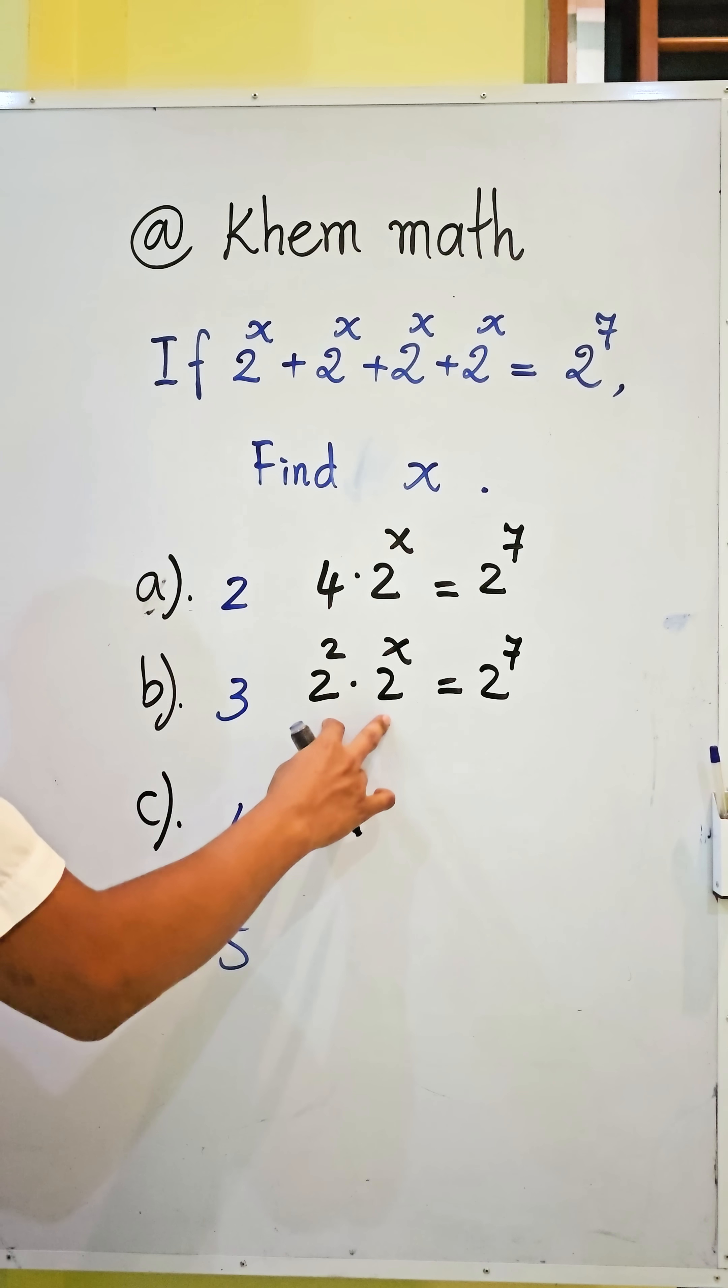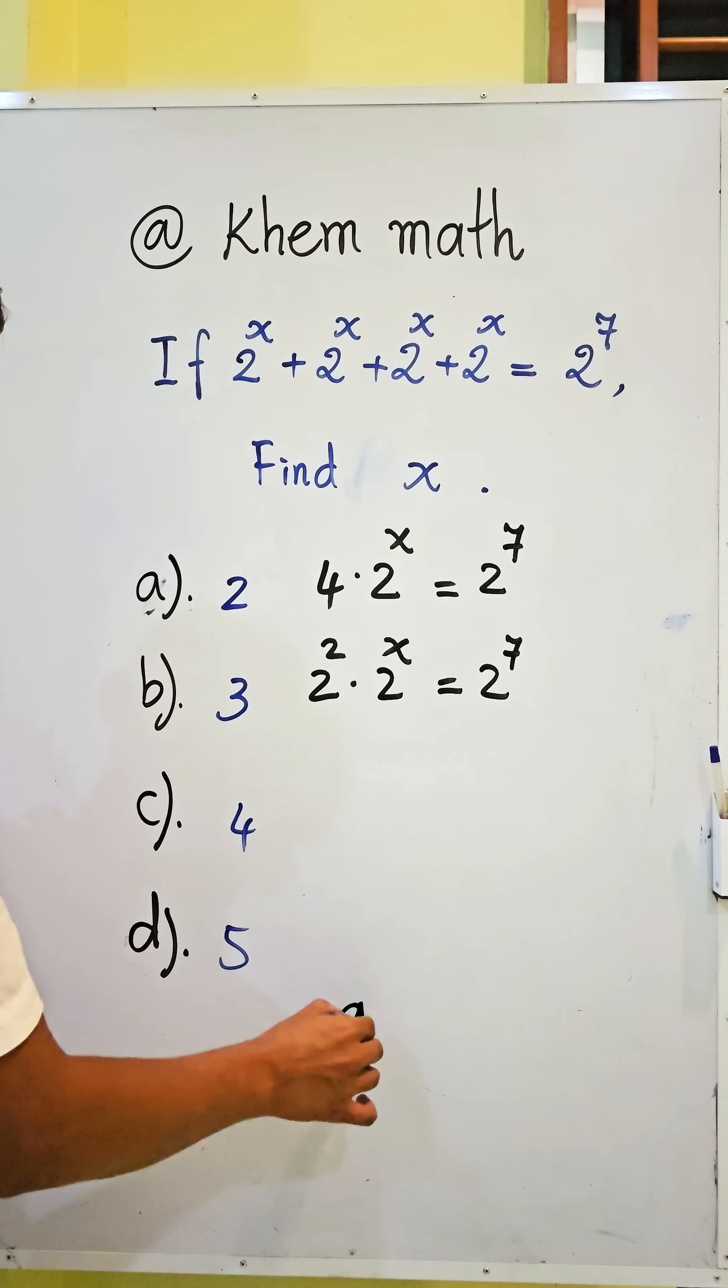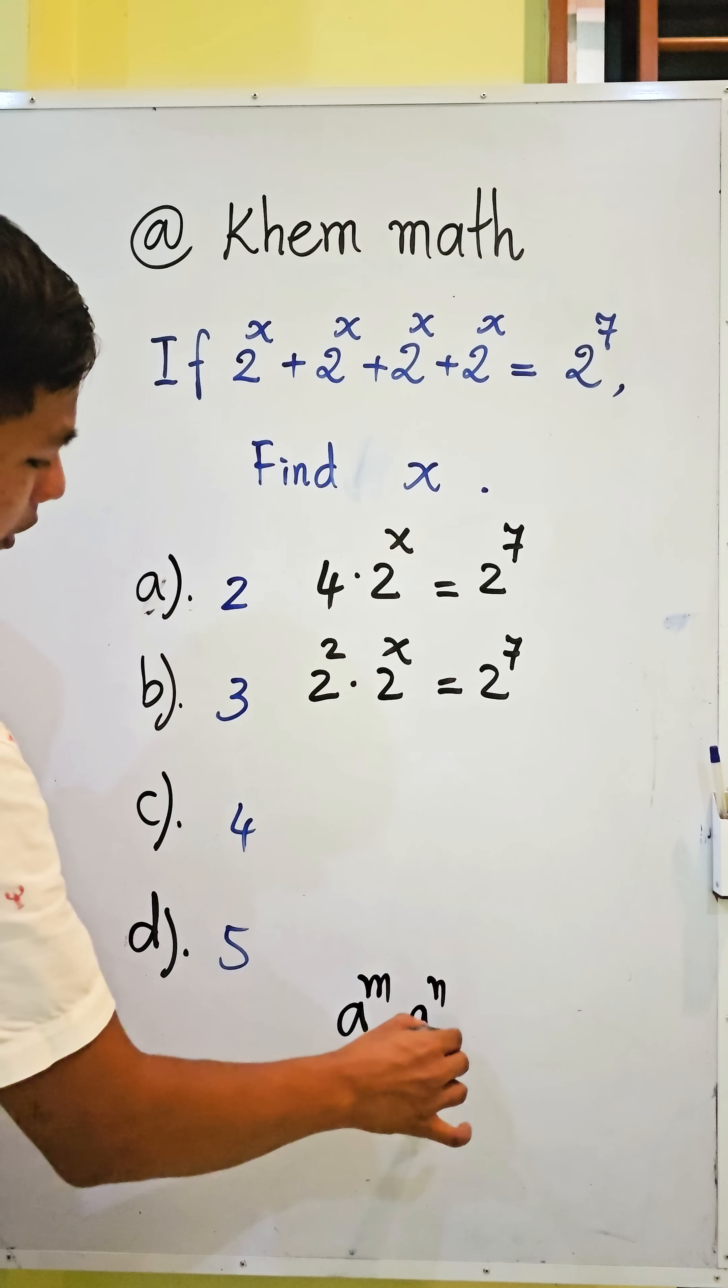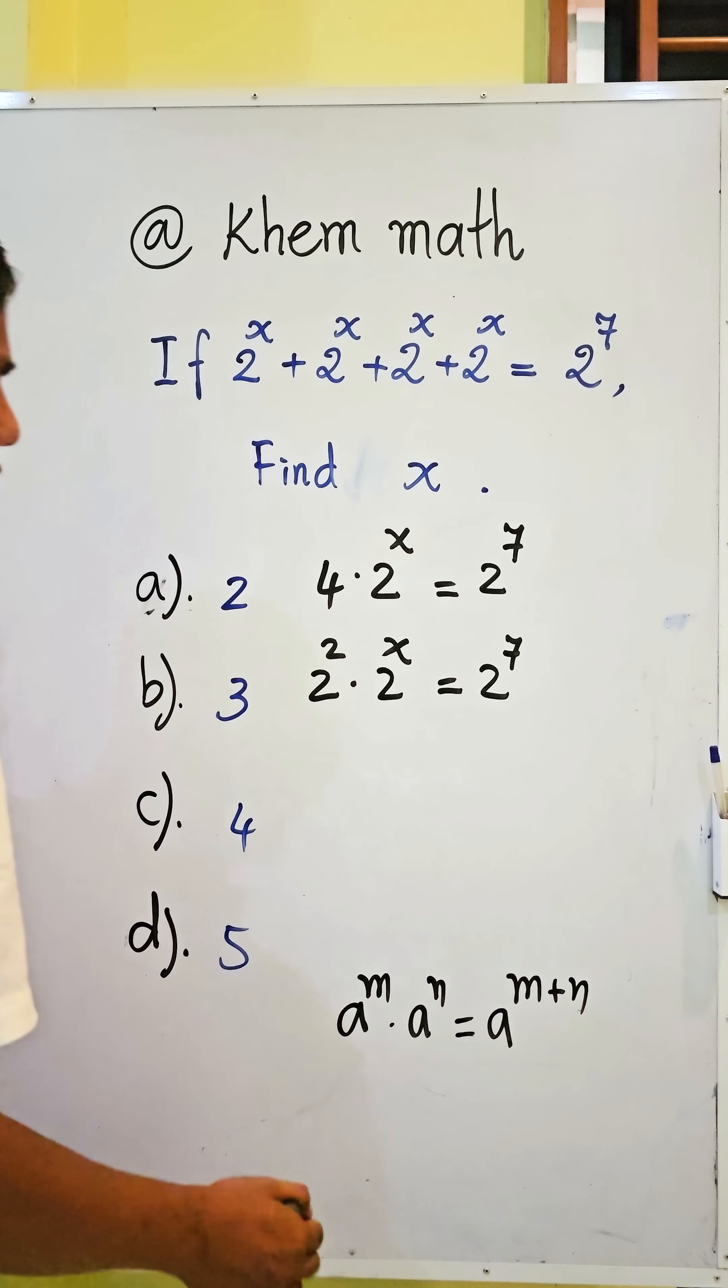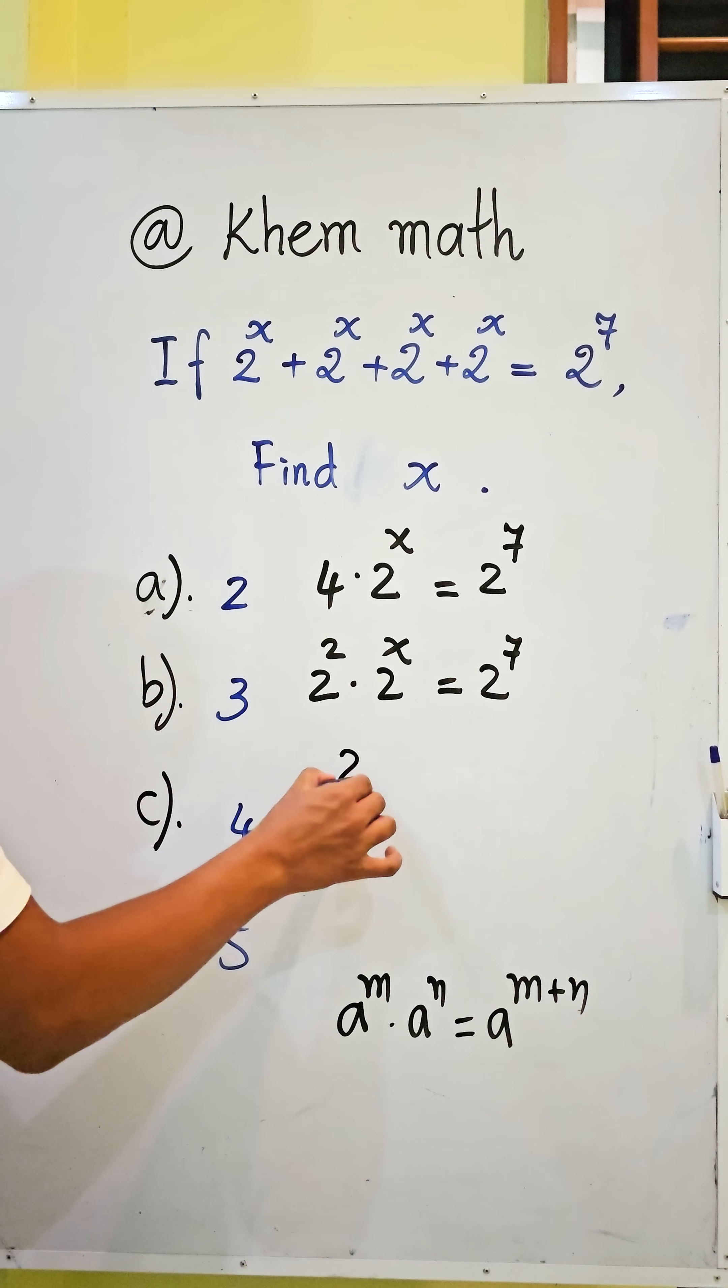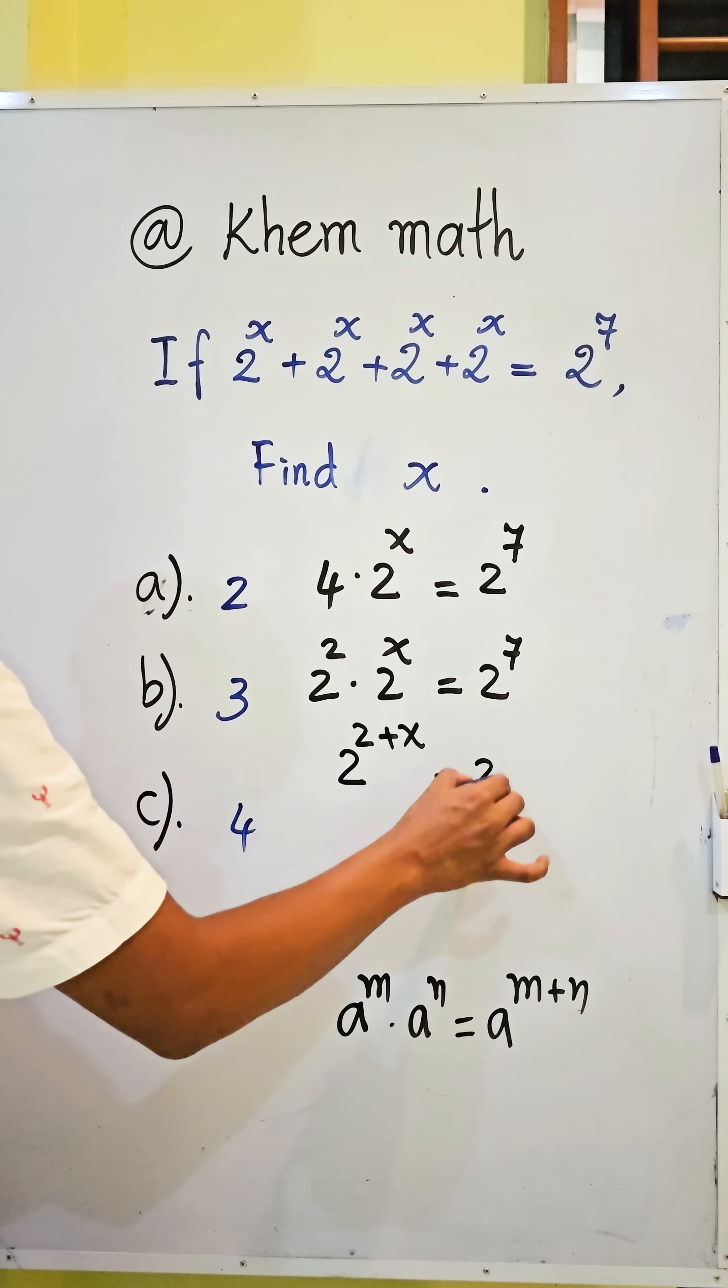And here we use the formula a power m times a power n equals a power m plus n. So here we get 2 power 2 plus x equal to 2 power 7.